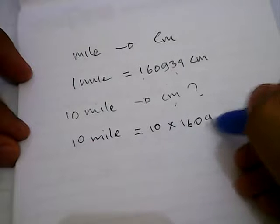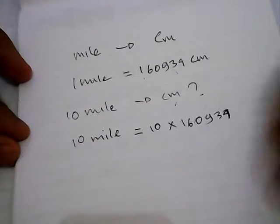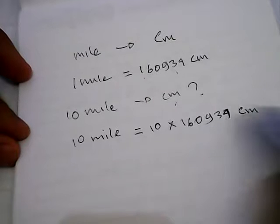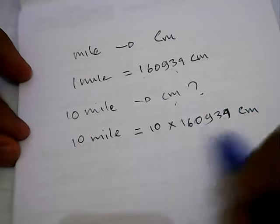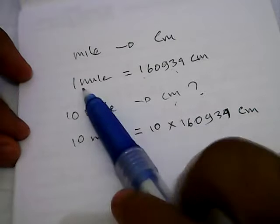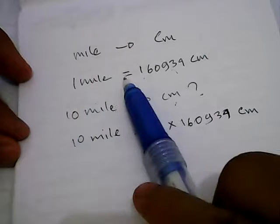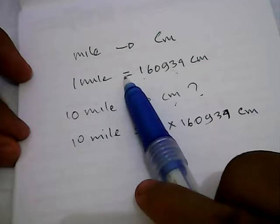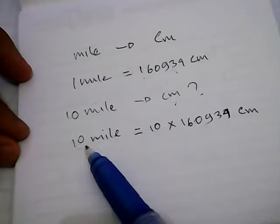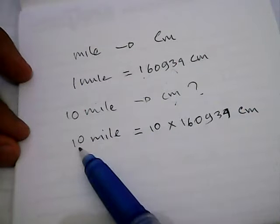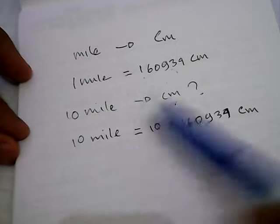...number 160,934 centimeters. Why do we need to multiply this 10 with this number? It's because we want to convert miles to centimeters. In this case, one mile is actually equal to one multiplied with this number, and so we need to do the same to this example: 10 miles equals...